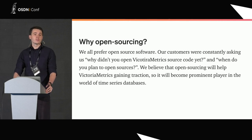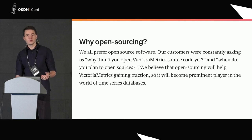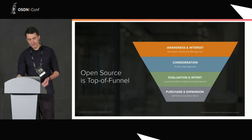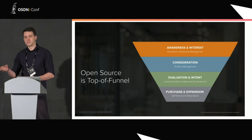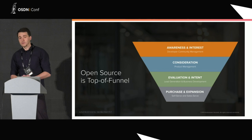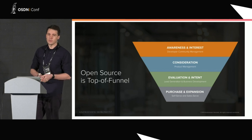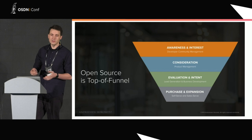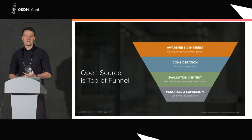Of course, that's not enough to just open your product on GitHub to get traction and attention. You need to do something more. After you build the product, you need to build a community for it. There is a famous talk from Peter Levin about open source projects, and one of his slides contains the open source top-of-funnel. It consists of four categories: awareness and interest, which is the most critical part and defines your market fit; consideration, which is how you manage your product with roadmaps, features, bug fixing; evaluation and intent, about finding business opportunities; and purchase and expansion, how you distribute the value of the product.